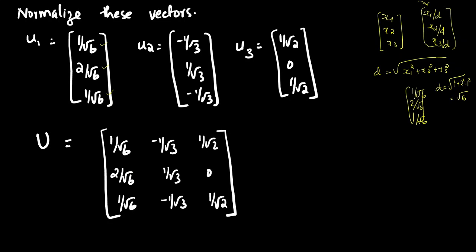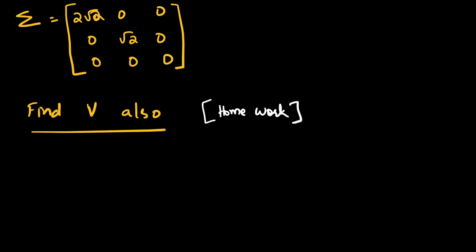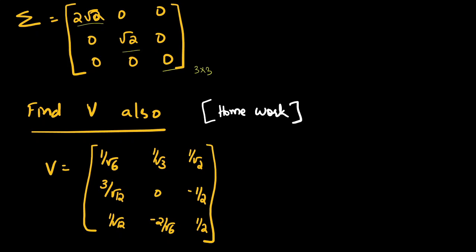Finally, we arrange the normalized vectors as columns to get U: the first column is U₁, second column is U₂, third column is U₃. Similarly, we can find V, and Σ is written as a 3 by 3 diagonal matrix with σ₁, σ₂, σ₃ as the diagonal elements. We can also find the value of V using the same procedure.